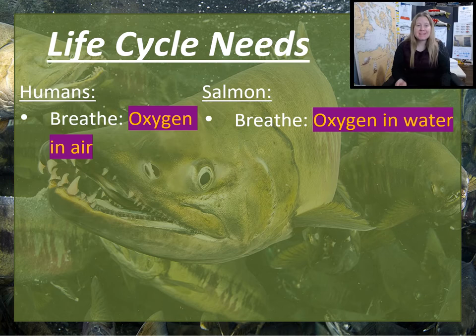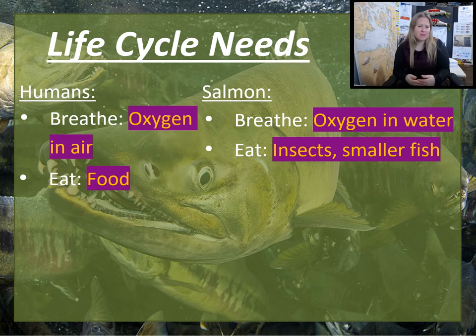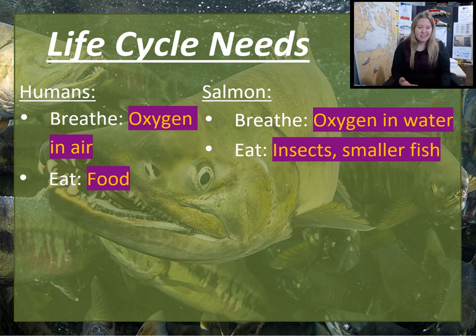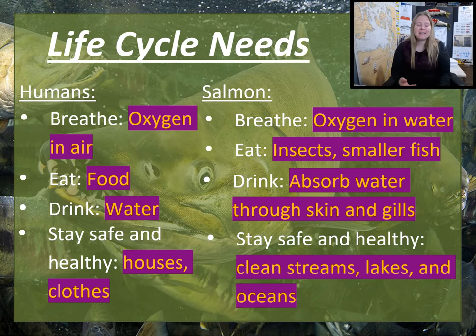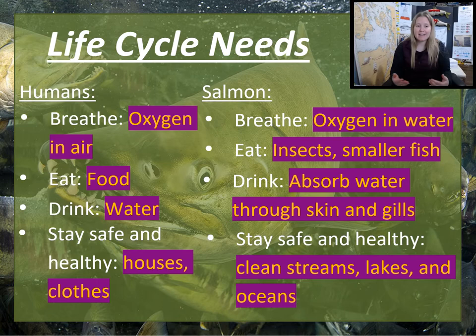Humans and salmon actually have a lot in common. We both need to breathe — humans get oxygen from the air, but salmon get oxygen from the water. We both need to eat — your favorite food might be pizza, tacos, or ice cream, but a salmon's favorite food when it's little in the river is insects. We both need to hydrate — humans drink water, salmon absorb water through their skin and gills. And we both need to stay safe and healthy — humans live in houses and wear clothes, while salmon stay safe by living in clean streams.